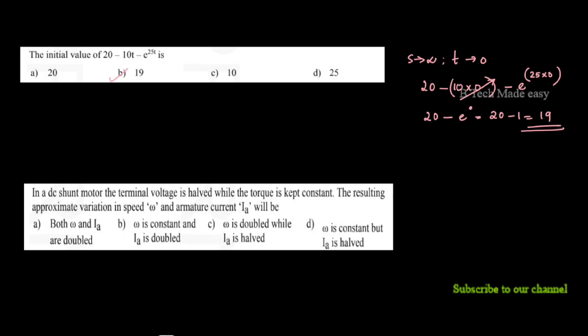In a DC shunt motor, the terminal voltage is halved while the torque is kept constant. Using the relation Eb × Ia = ω × T, and since terminal voltage ≈ Eb, when voltage is halved, Eb becomes Eb/2. With torque constant, omega remains approximately constant and the armature current Ia is doubled.